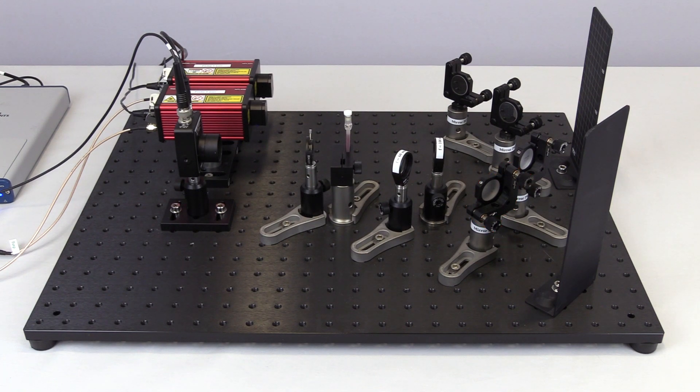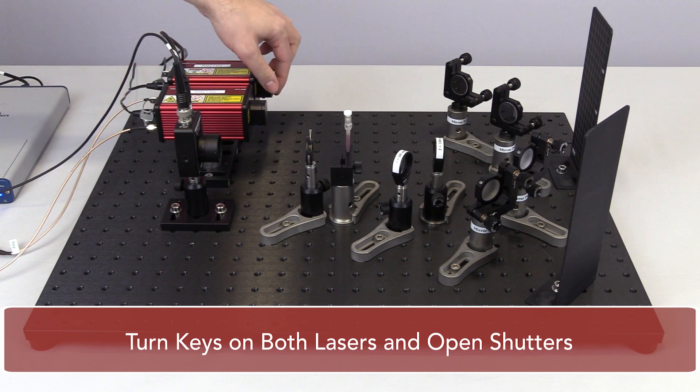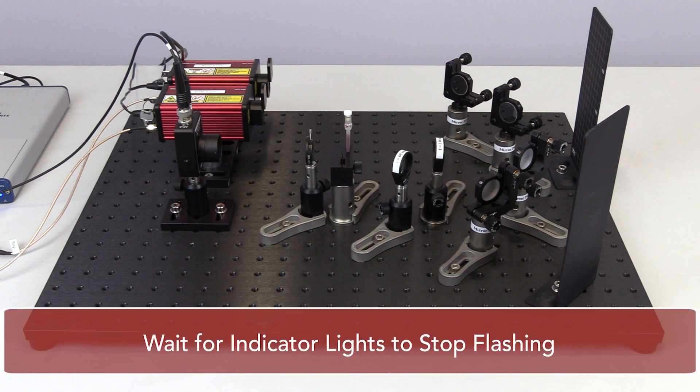First, for both the pump and probe lasers, turn the power key switch to the on position and open the laser shutter. Wait about 30 seconds for the indicator lights on each laser to stop blinking.